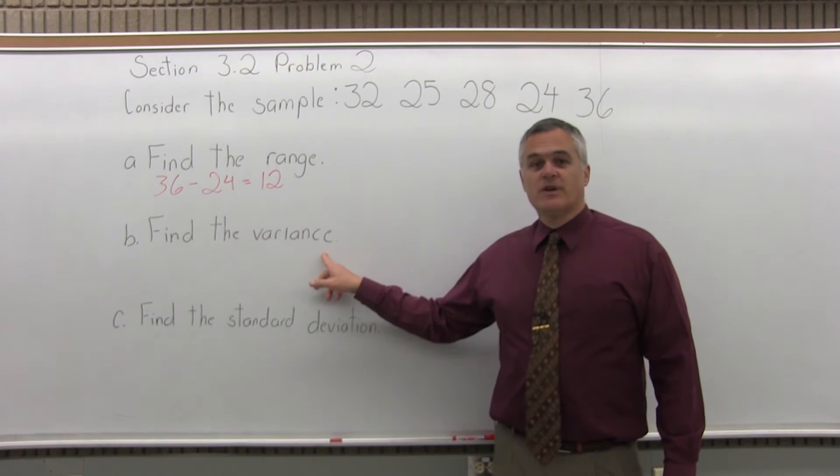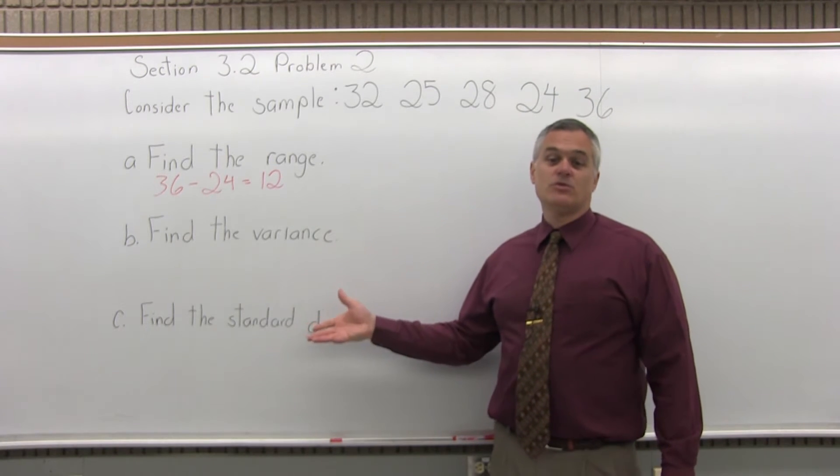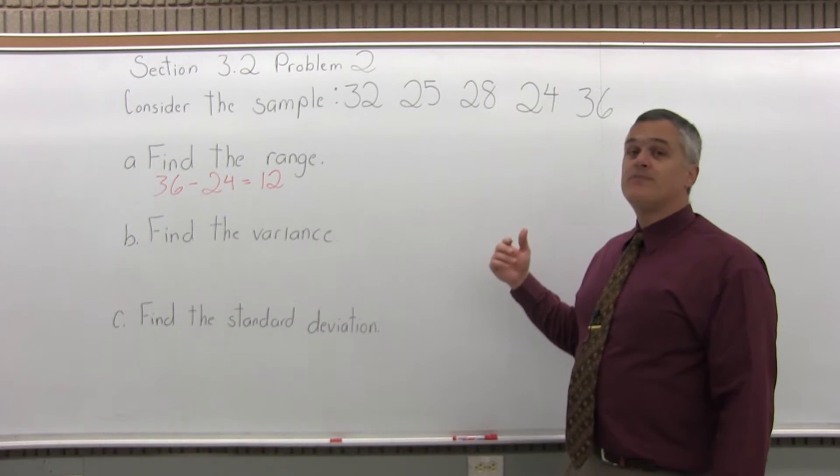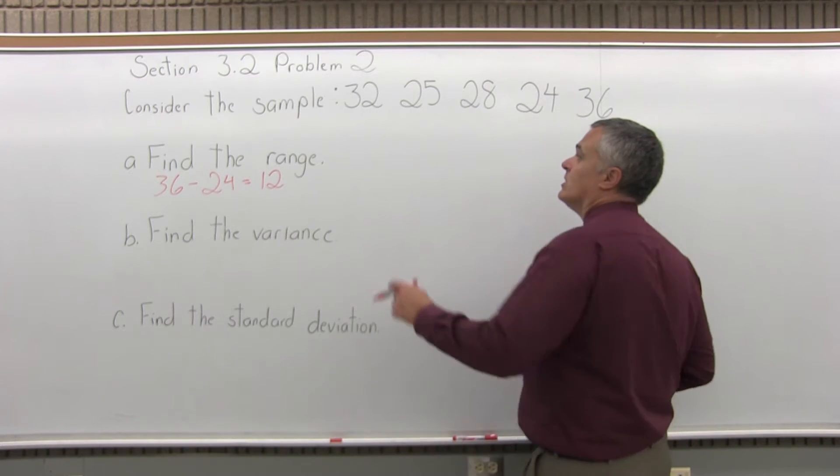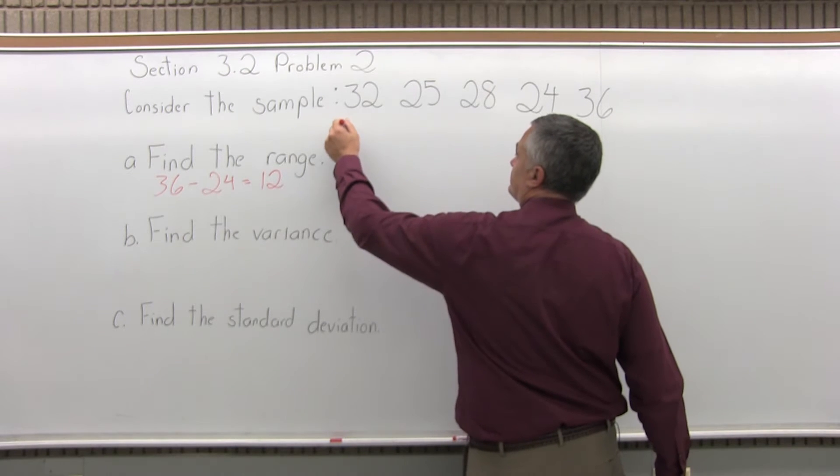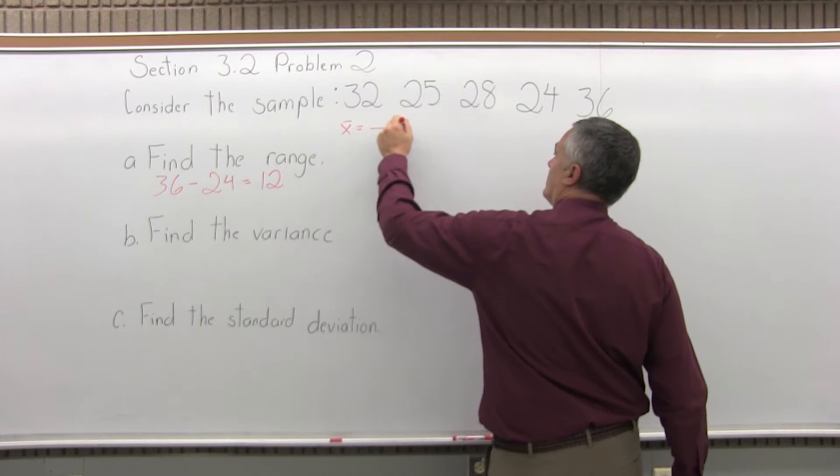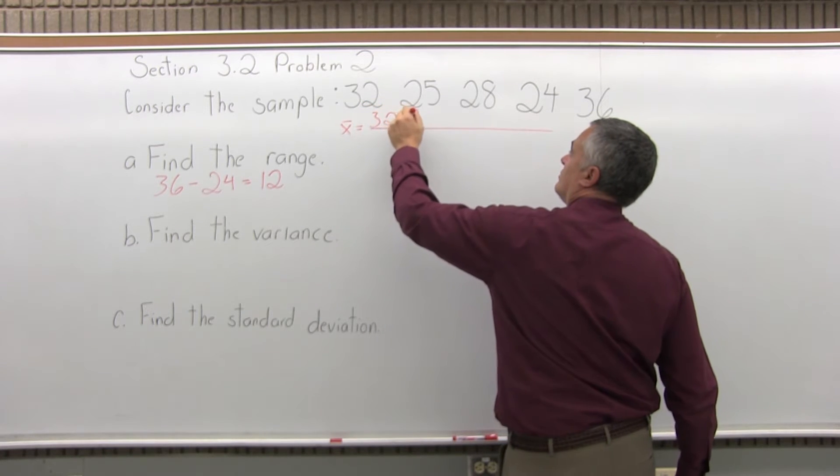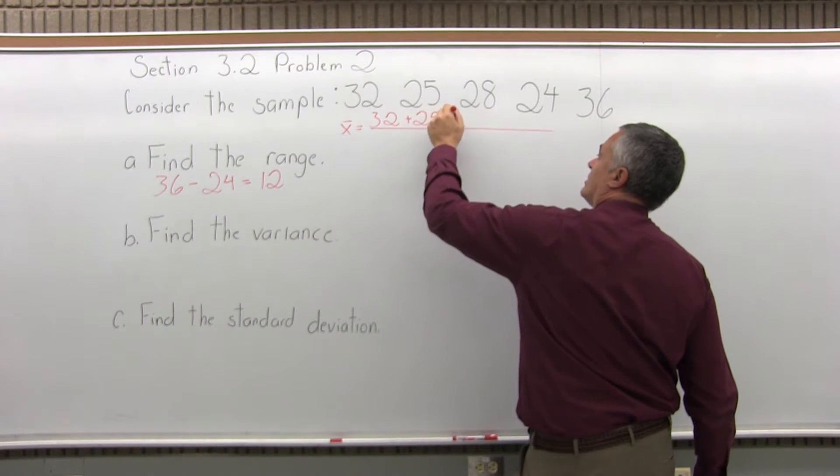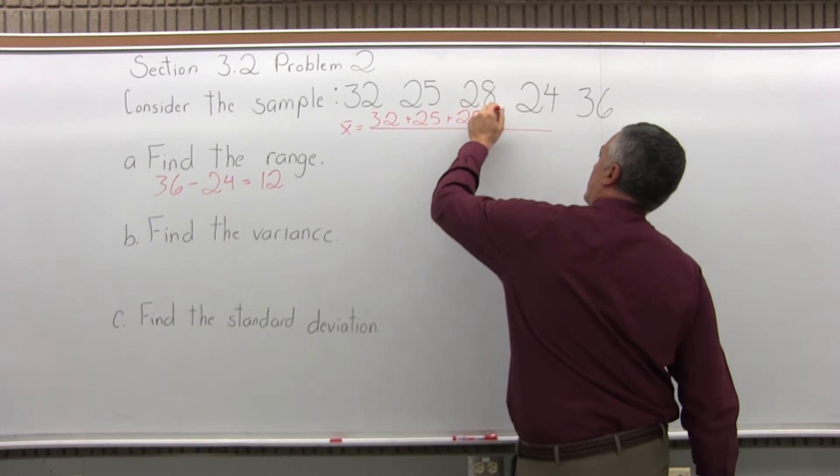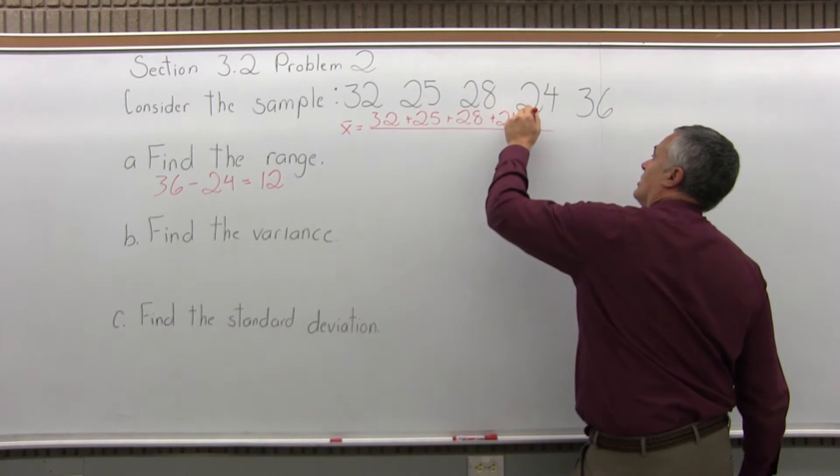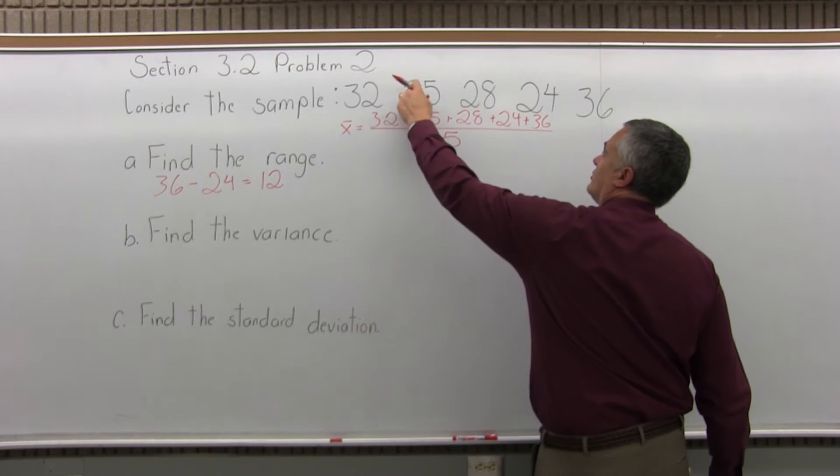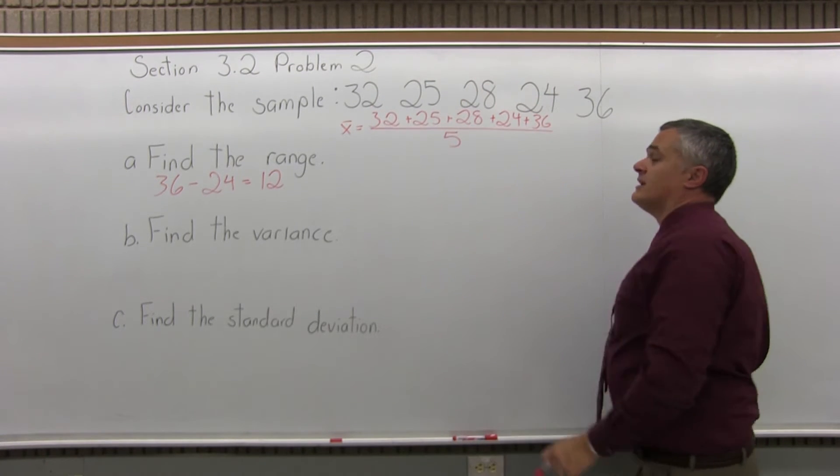The next part wants us to find the variance. To find the variance, we do a four-step process. Step one is find the mean, label it X bar. So, we'll have X bar equals, and we'll add these numbers. 32 plus 25 plus 28 plus 24 plus 36, and we'll divide that by 5 because there are 1, 2, 3, 4, 5 data values.